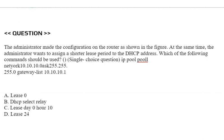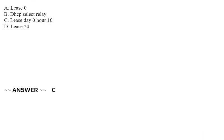Next question: The administrator made the configuration on the router and wants to assign a shorter lease period to the DHCP address. Which of the following commands should be used? Option A: lease 0. Option B: DHCP select relay. Option C: lease day 0 hour 10. Option D: lease 24. Correct answer is Option C.